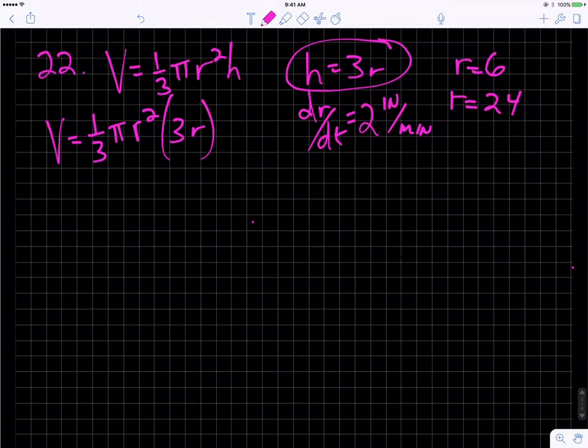That's our volume formula for this particular cone because it has that ratio where the height is equal to 3 radii. So I can simplify this: the 1/3 times the 3 becomes 1, the r² times the r becomes r³. So there's our static volume formula for this cone, V = π r³.